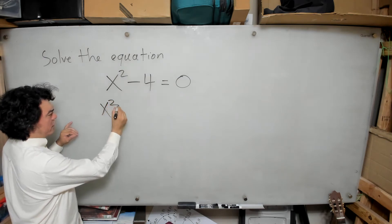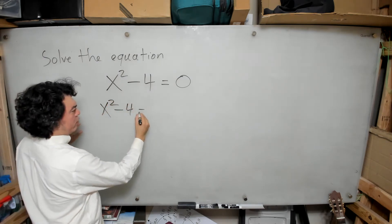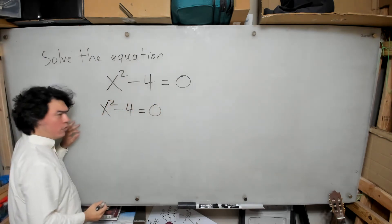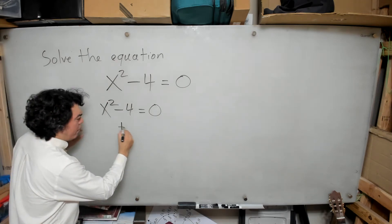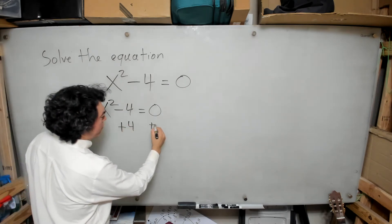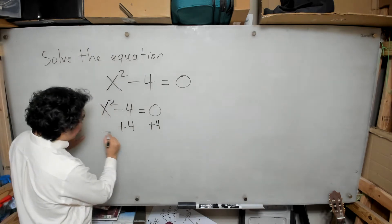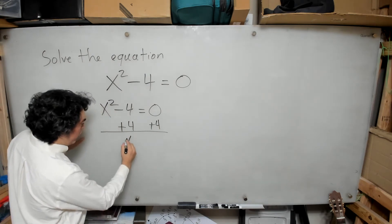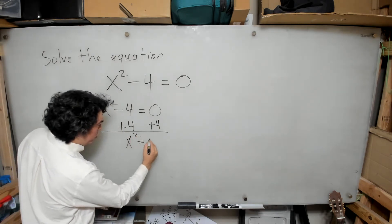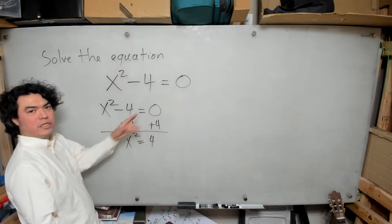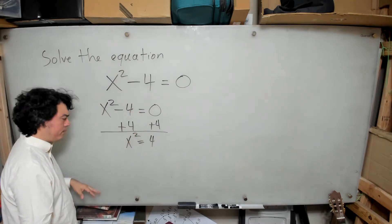So if I have x squared minus 4 equals 0, then what I can do is add 4 to the other side, and I get that x squared is equal to positive 4, because 0 plus 4 is 4.